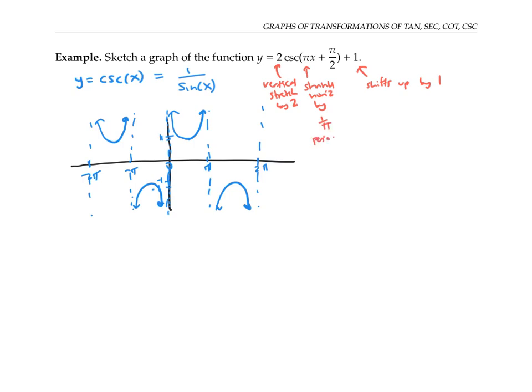The pi means everything shrinks horizontally by one over pi. And so the period, instead of being two pi like it is for cosecant, it's going to be two pi divided by pi, which is two.